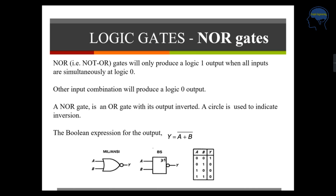Next is NOR, which is NOT plus OR. If you connect a NOT to your OR gate output, you will get a NOR gate. In the OR gate, only for input 0 0 do you get 0 as output; all other cases give 1. The complement of that gives your NOR gate. The Boolean expression is Y equal to A plus B bar. An OR gate with its output inverted gives a NOR gate.